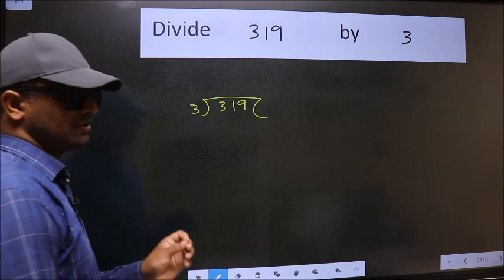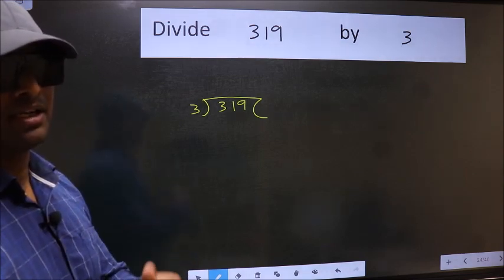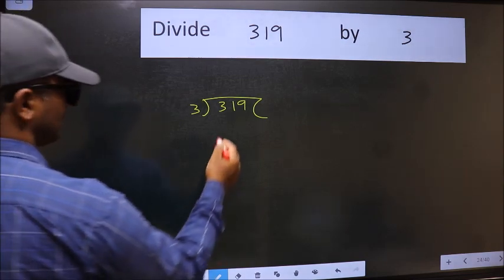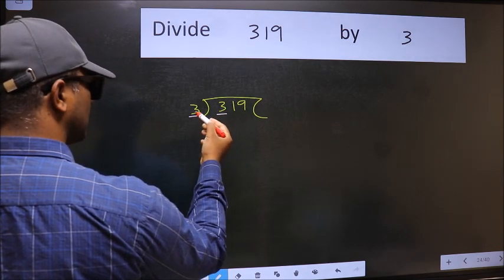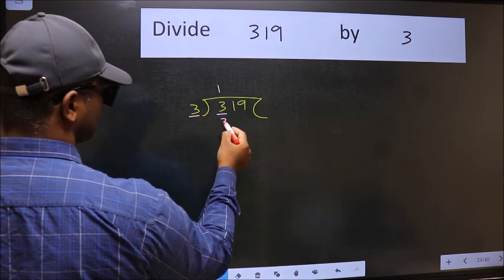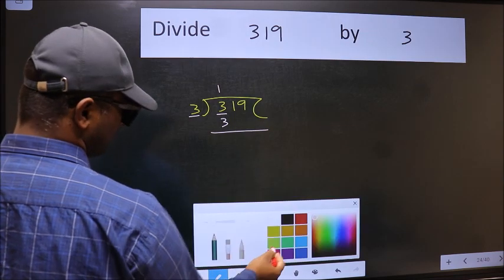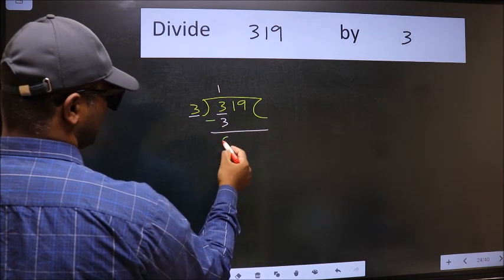This is your step 1. Next. Here we have 3. Here also 3. When do we get 3 in 3 table? 3 once 3. Now we should subtract. We get 0.